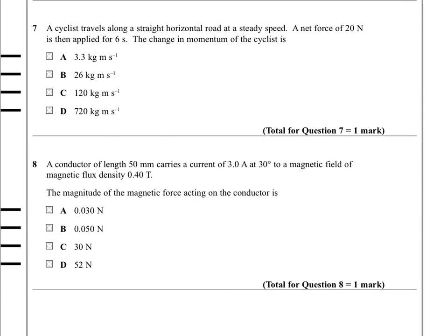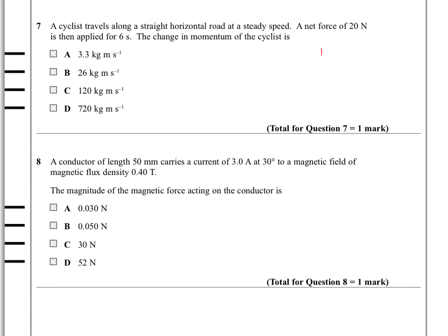Question 7. A cyclist travels along a straight horizontal road at a steady speed. A net force of 20N is then applied for 6 seconds. The change of momentum of this cyclist is going to be one of these values. So we remember that Newton told us that the change of momentum, MV minus MU, is equal to the impulse given FT. So we have here a force and a time given in the question.